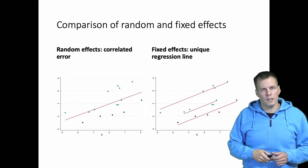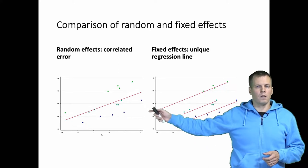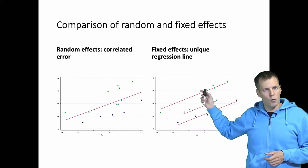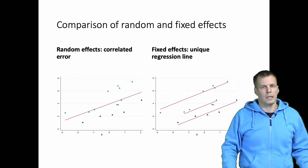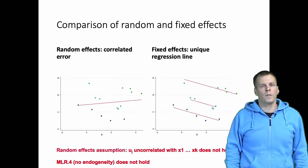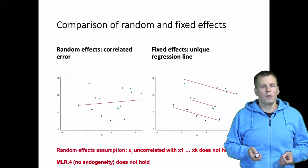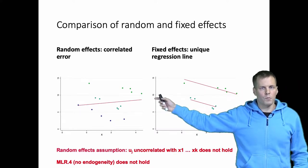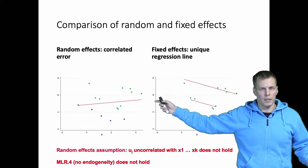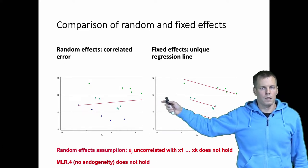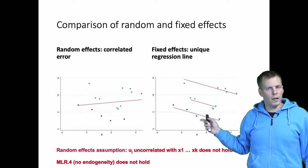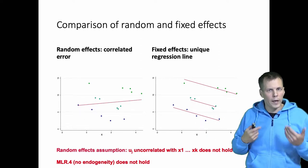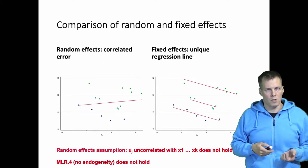In this case, the random effects assumption holds and the regression coefficient — the slope — is about the same from both models. When the random effects assumption doesn't hold, the random effects approach produces inconsistent and biased estimates for the within effect. But the fixed effects approach, which gives a unique regression line per cluster, will estimate the within effect consistently.